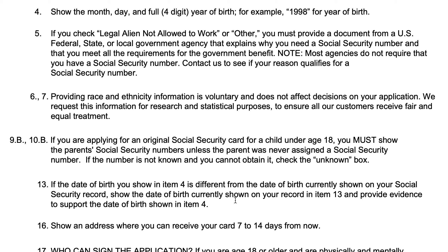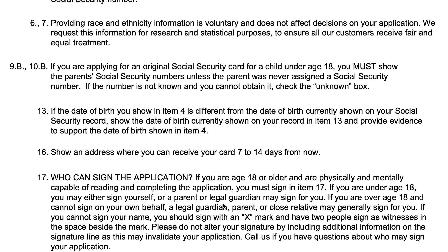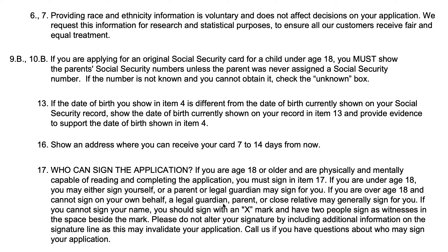If you're applying on behalf of someone who's under 18, you must show the parent's Social Security numbers unless the parent was never assigned one. If the number's not known, you can check the unknown box. Indicate an address where you can receive your card within 7 to 14 days. If you're age 18 or older and are physically and mentally capable, you must sign item 17. If you're under 18, you can sign it yourself or your parent or legal guardian can sign on your behalf. If you're over 18 and you cannot sign on your behalf, a legal guardian, a parent, or a close relative can sign for you.